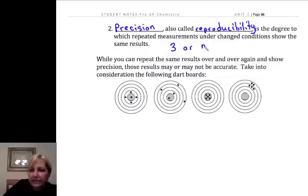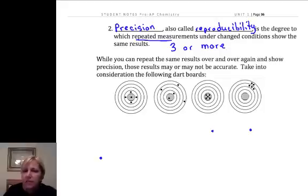Precision is how close repeated measurements are to one another. You can't really talk about how close two are unless you discuss it relative to a third, so we need at least three to discuss this.